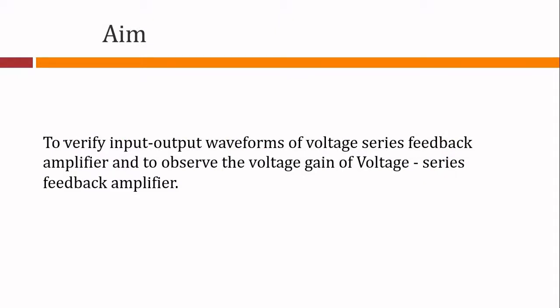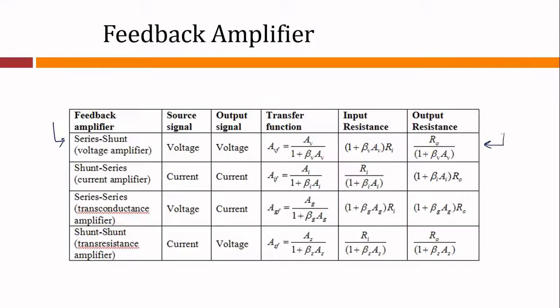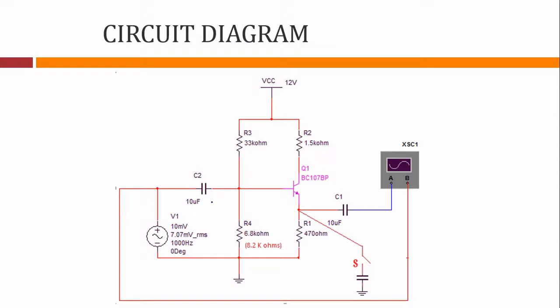The aim of this experiment is to verify the input-output waveforms of a voltage series feedback amplifier and to observe its voltage gain. The circuit is similar to experiment one — the only difference is that in the first experiment (current series feedback), the output was taken from the collector terminal, whereas here the output is taken from the emitter terminal. This makes it a common collector circuit referred to as an emitter follower, because the output follows the input. This circuit has very high input impedance and very low output impedance.